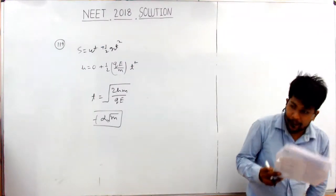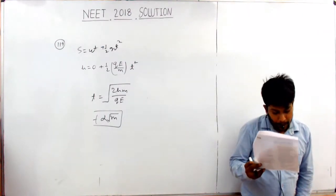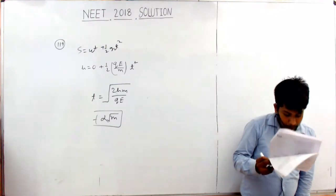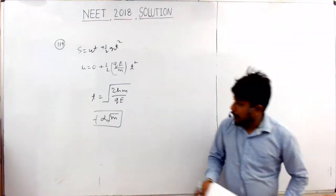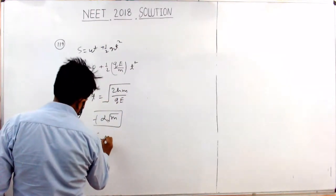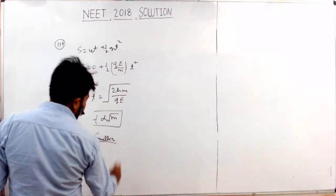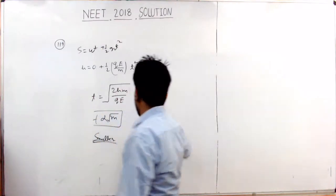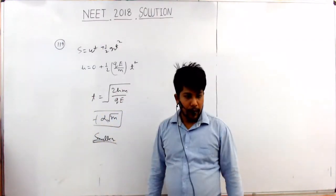The electron needs less time, a smaller time. Why? Because the mass of the electron is much smaller compared to the proton. How much is the mass of the electron?